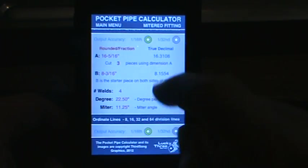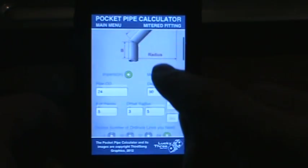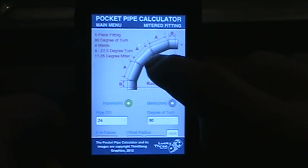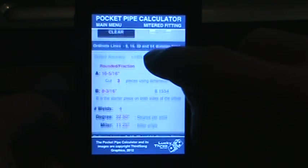You'll see your output for your A pieces. You have to cut three of them at dimension A. Let's scroll up. I'll just give you an idea of a five piece. All your A pieces are going to be cut at the dimension specified below.